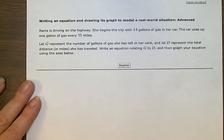Let G represent the number of gallons of gas she has left in her tank, and let D represent the total distance in miles she has traveled. Write an equation relating G to D, and then graph your equation using the axis below.